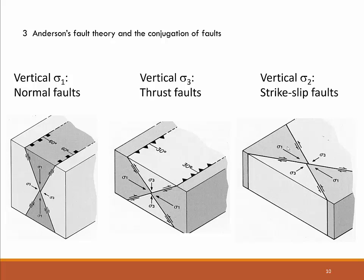This only applies if the rock is mechanically isotropic and if the theta angle is 30 degrees. If the theta angle changes — and it can vary by plus or minus 5 degrees — then the fault orientation might also change. But in principle the most common faults follow Anderson's fault theory.